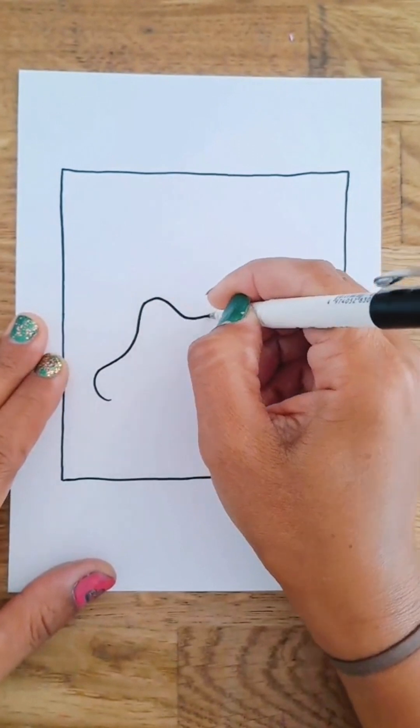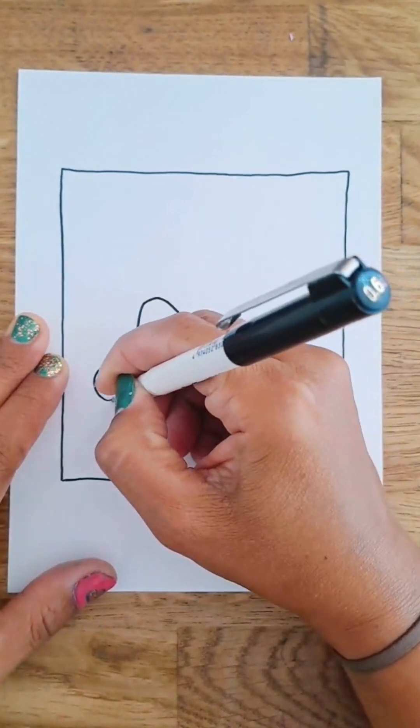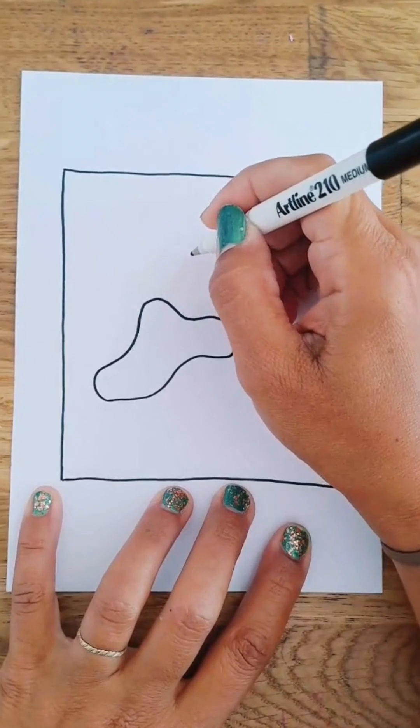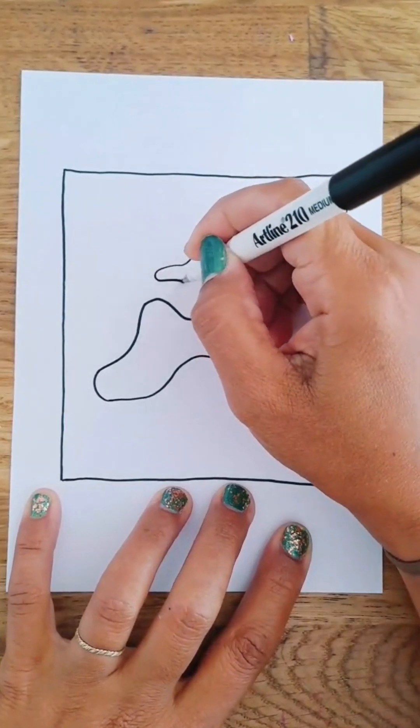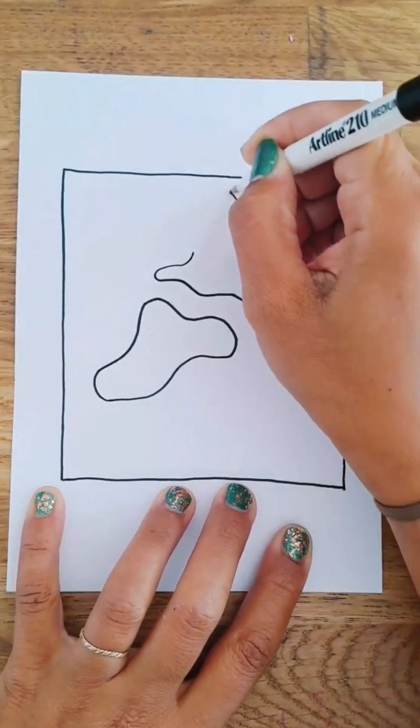So first of all, start off by drawing some clouds or some type of giraffe print or cow print you might see as well in this.